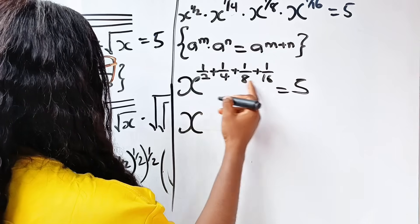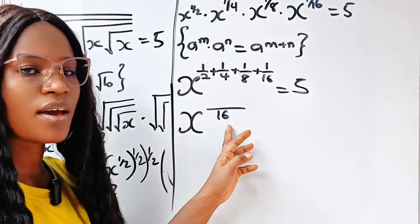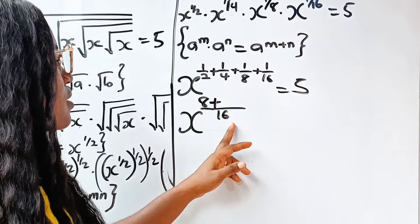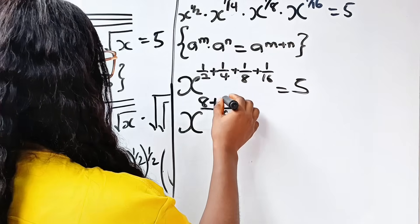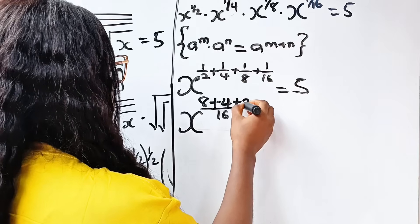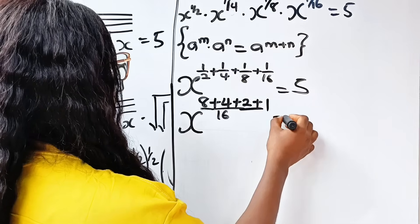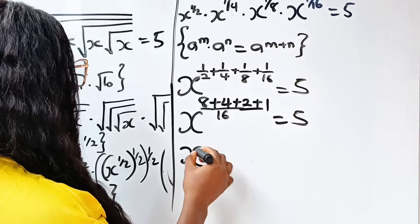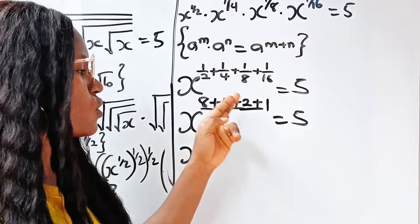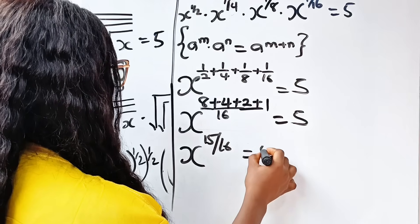Remember that a to the power of m multiplied by a to the power of n is equal to a to the power of m plus n. So we take one base x and add the powers: 1/2 plus 1/4 plus 1/8 plus 1/16. The LCM of 2, 4, 8, and 16 is 16, giving us 8 plus 4 plus 2 plus 1 over 16, which is 15 over 16. So we have x to the power of 15 over 16 equal to 5.